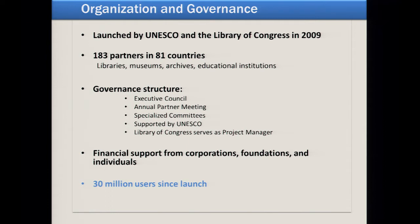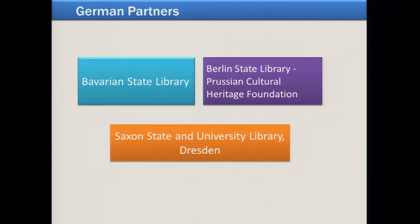We've had about 30 million users since launch, and I'll say more about usage later. We have three very good German partners: the Bavarian State Library in Munich, the Berlin State Library — whose director Barbara Schneider-Kempf is a member of our executive council — and the library in Dresden. All three have contributed very important content to the World Digital Library.